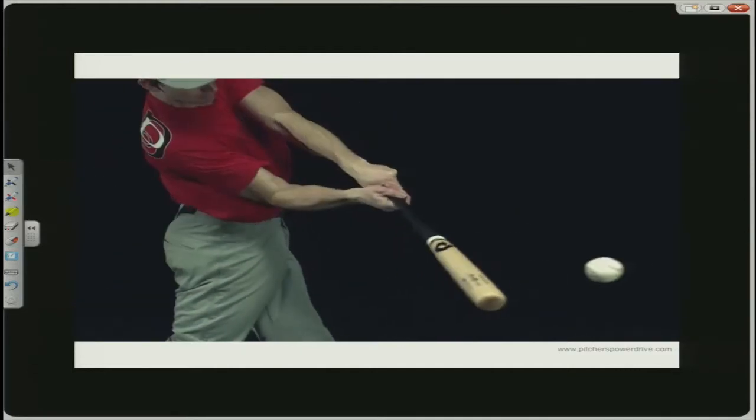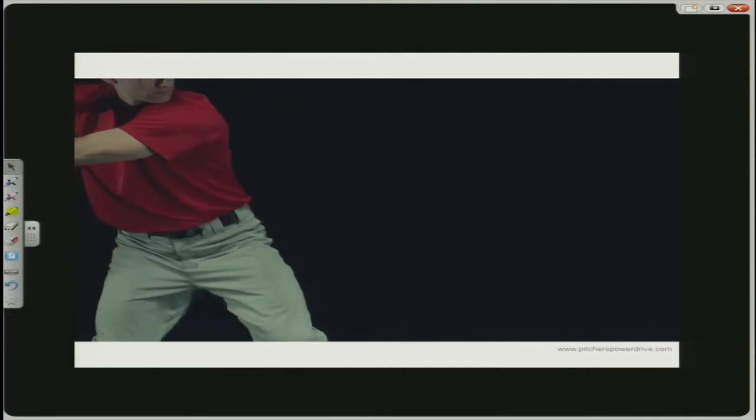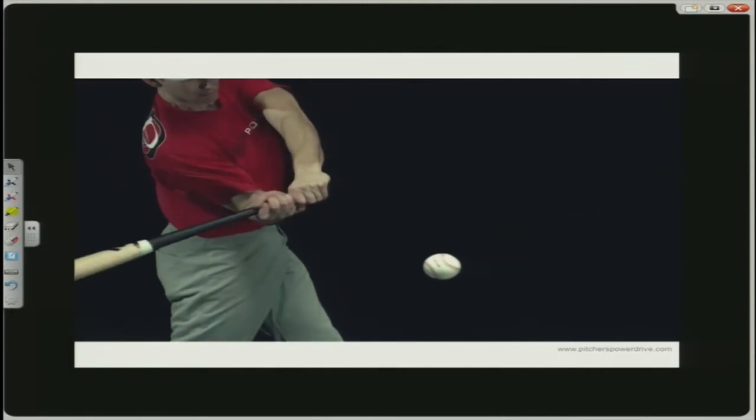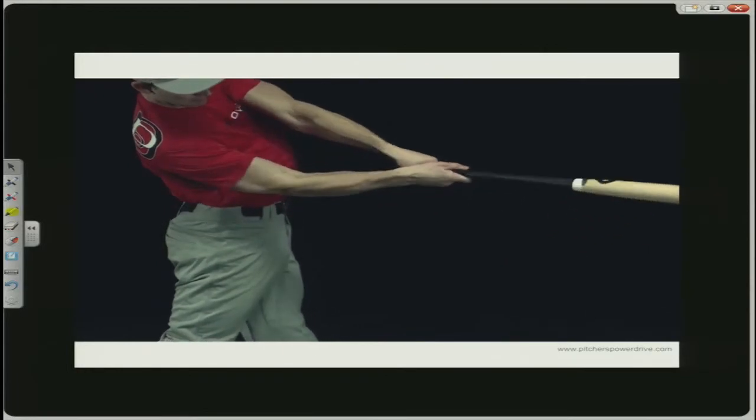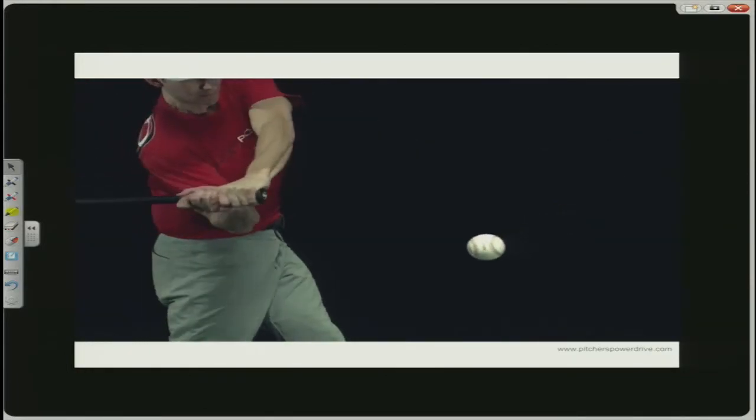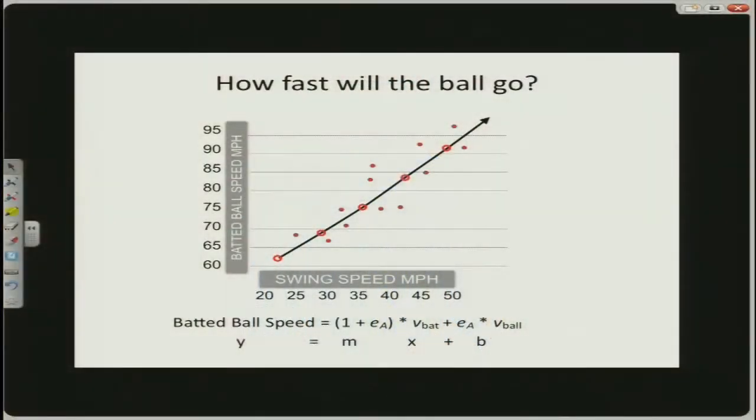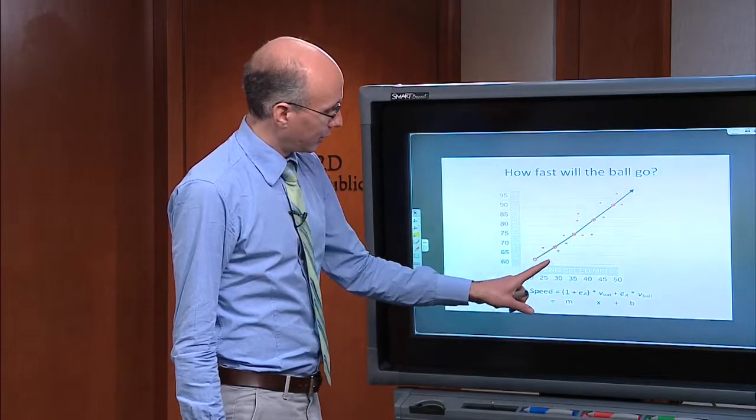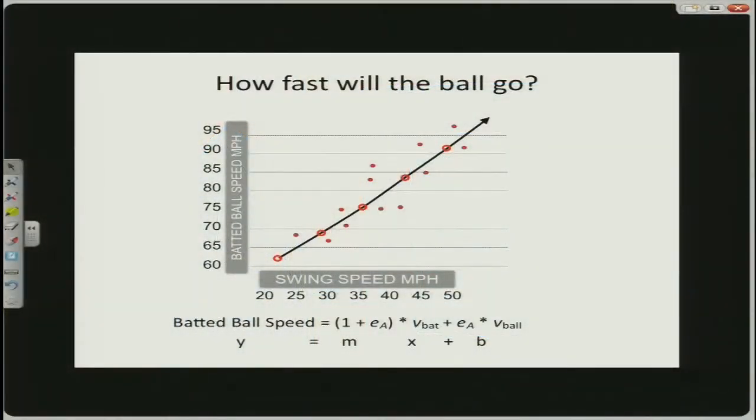So, to do that you'd probably want to know something about the bat, how hard it was, and how fast it was swung, and how fast the ball was pitched, and probably something about the ball itself. So if we understand something about the bat and the ball, and how fast the bat is swung, and how fast the pitch is pitched, we can probably design a math equation that will help us understand what the speed of the ball coming off the bat will be. And that's what's pictured in this graph. So what we see here on the x-axis, the horizontal axis, is the speed of the bat, the swing speed. And that is the variable that will help us determine what the speed coming off the bat will be.